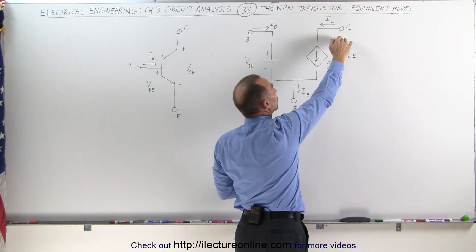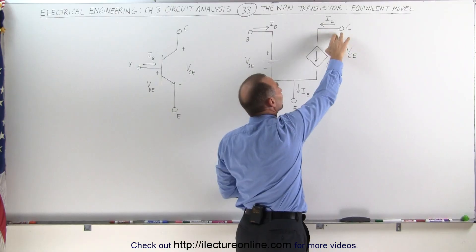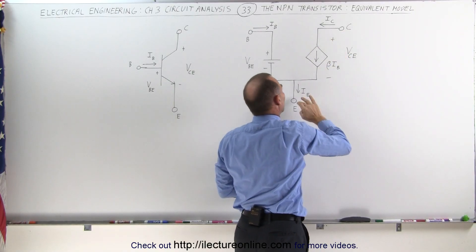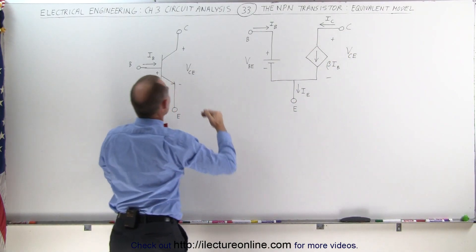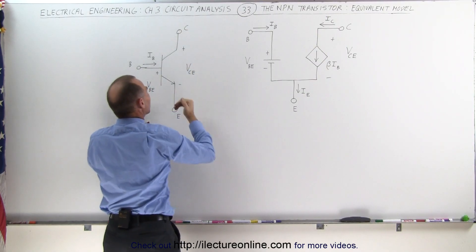Also notice that the voltage between the collector and the emitter can be defined here by the voltage difference from this point to this point on the circuit, which is the same as the voltage difference from this point to this point on the circuit.